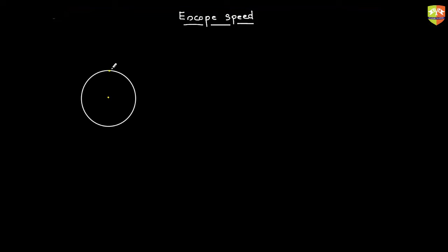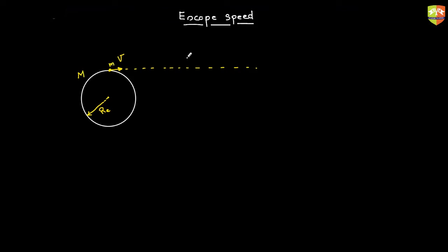It does not matter at what angle you throw it. Even if you throw it horizontally from the Earth's surface, it will slowly go to infinity if you throw it with that speed. We need to find out what is that minimum speed. Let's say that minimum velocity is v, radius of the Earth is R_e, mass of the Earth is capital M, and mass of the object is small m. Try to find the minimum velocity using the work-energy theorem.